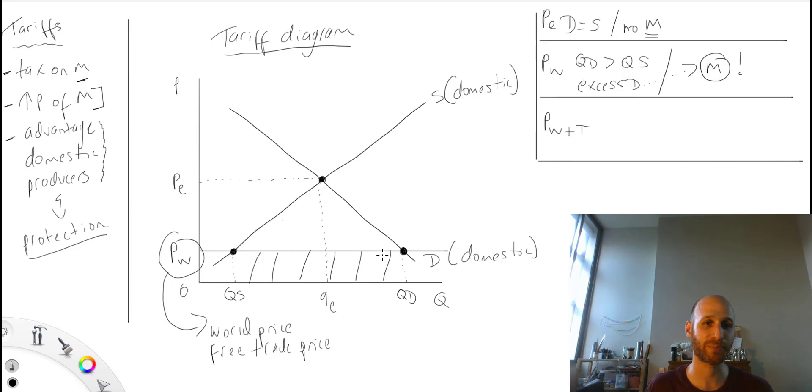Right, this here is the level of imports under the world price. So this is what consumers will go and get to satisfy their demand.